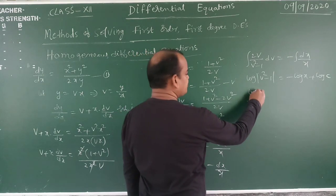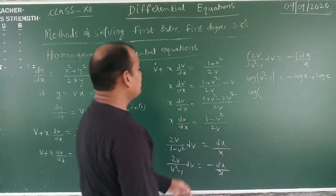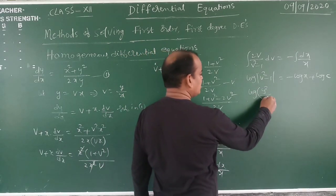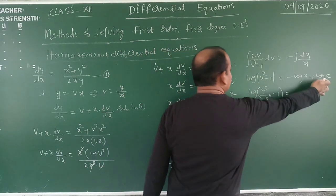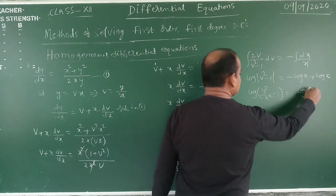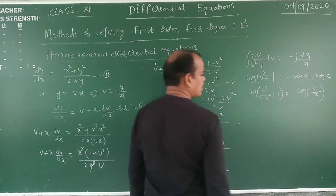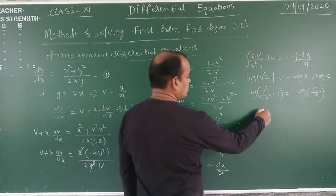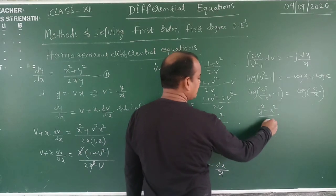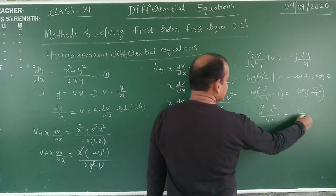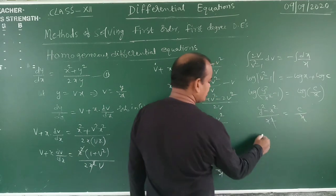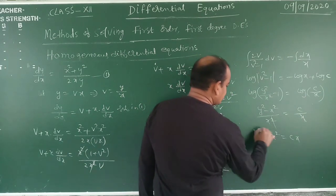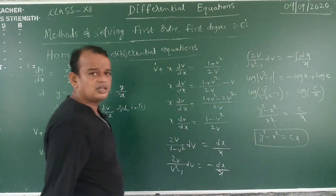Integrating both sides: log|v² − 1| = −log x + log c. Now substituting v = y/x: log|y²/x² − 1| = log(c/x). This gives log|(y² − x²)/x²| = log(c/x). Removing logarithms: (y² − x²)/x² = c/x. Cancelling x: y² − x² = cx. This is the general solution (the curve).